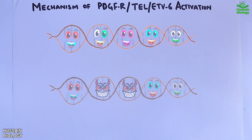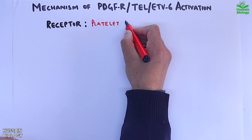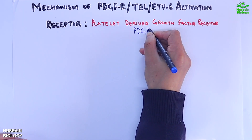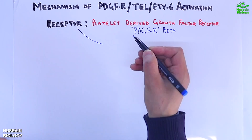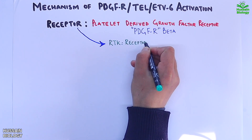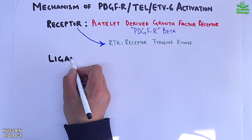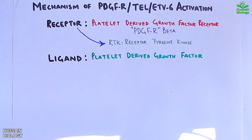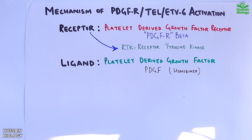In this pathway we are going to see the receptor in the form of the platelet-derived growth factor receptor — that's the PDGF-beta receptor. It is a type of RTK, that's receptor tyrosine kinase, and for this receptor we have a ligand: platelet-derived growth factor, PDGF. It acts on this receptor in homodimer form.